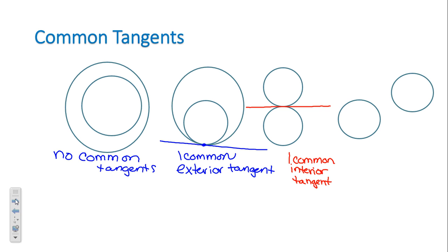Are there other tangents we could draw? On the outside — not just between them — we can have tangents on both sides. So we can have two common exterior tangents as well. This means that pair of circles has three common tangents total: one common interior tangent and two common exterior tangents.